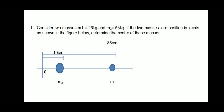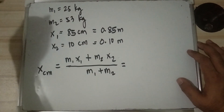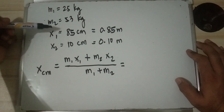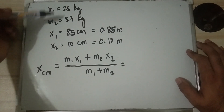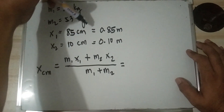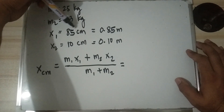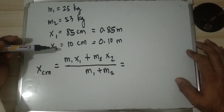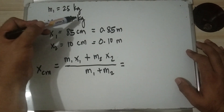Example 1: Consider two masses, m sub 1 equals 25 kilograms and m sub 2 equals 53 kilograms. If the two masses are positioned on the x-axis as shown in the figure below, determine the center of mass of these masses. Solution — given: m sub 1 is 25 kilograms, m sub 2 is 53 kilograms. x sub 1, the distance of the 25-kilogram object from the origin, is 85 cm, which converts to 0.85 meters.